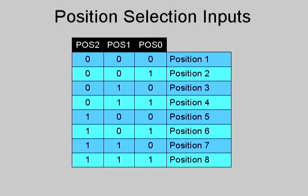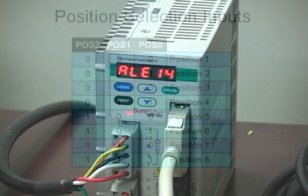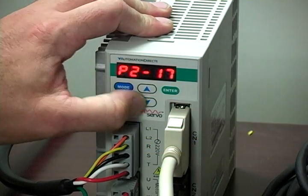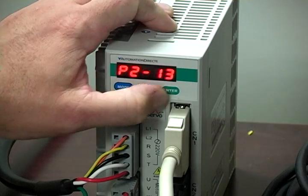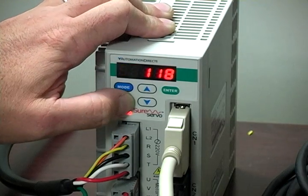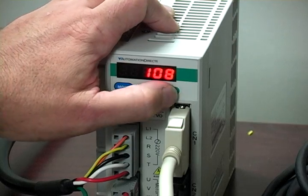To save digital inputs for other uses, not all of the position selection inputs have to be configured. If only two set points are needed, for example if the motor needs to move and then return, only one position selection set point needs to be configured. Configuring only one input, 2 for example, with POS0 and POS1 not assigned, would allow the selection of POS1 and POS5. We also need to set digital input 4 to be the command trigger by setting P213 to 108. This trigger will actuate the movements.